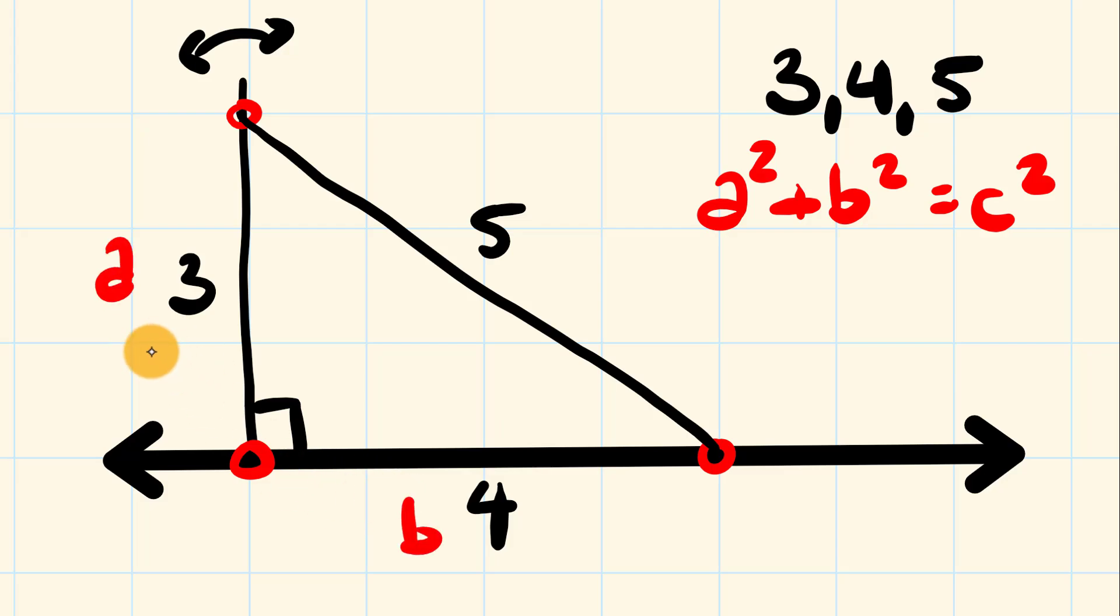It doesn't matter which one you call which, but these two shorter sides are called a and b, and the long side here, the hypotenuse, is called c.